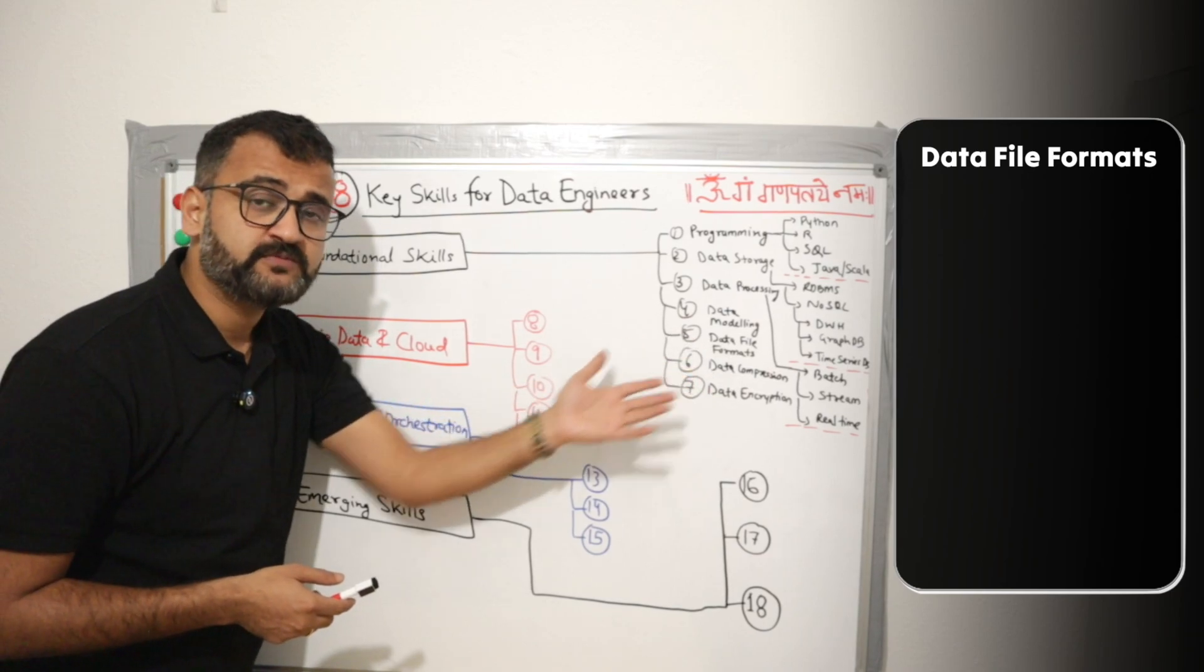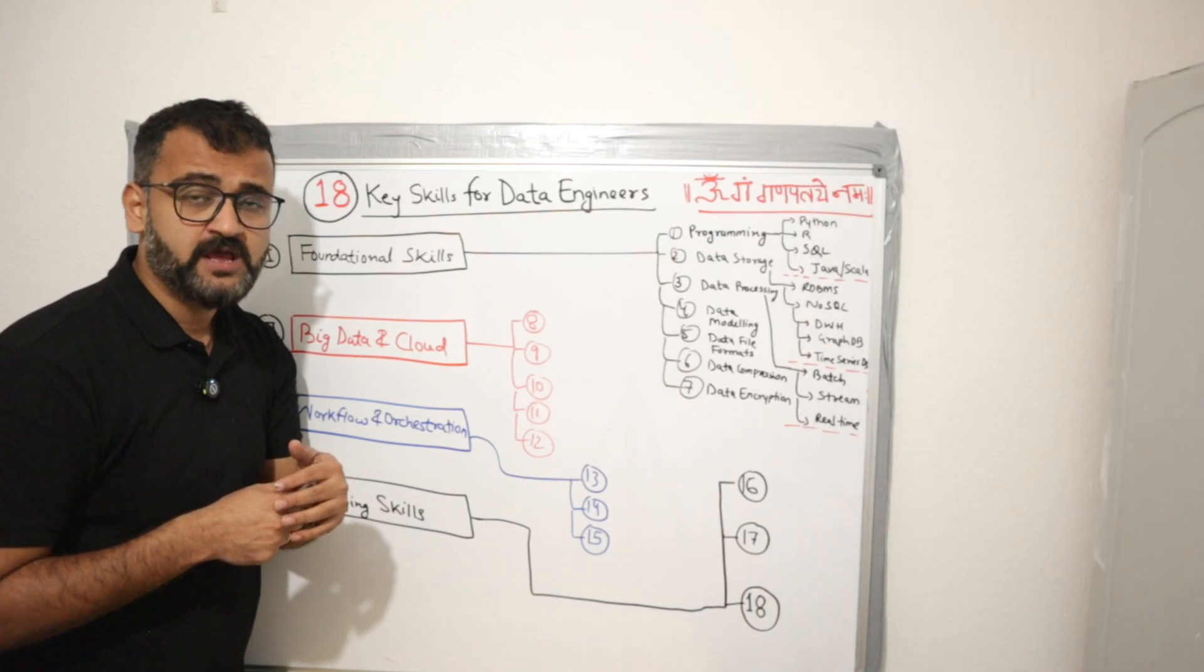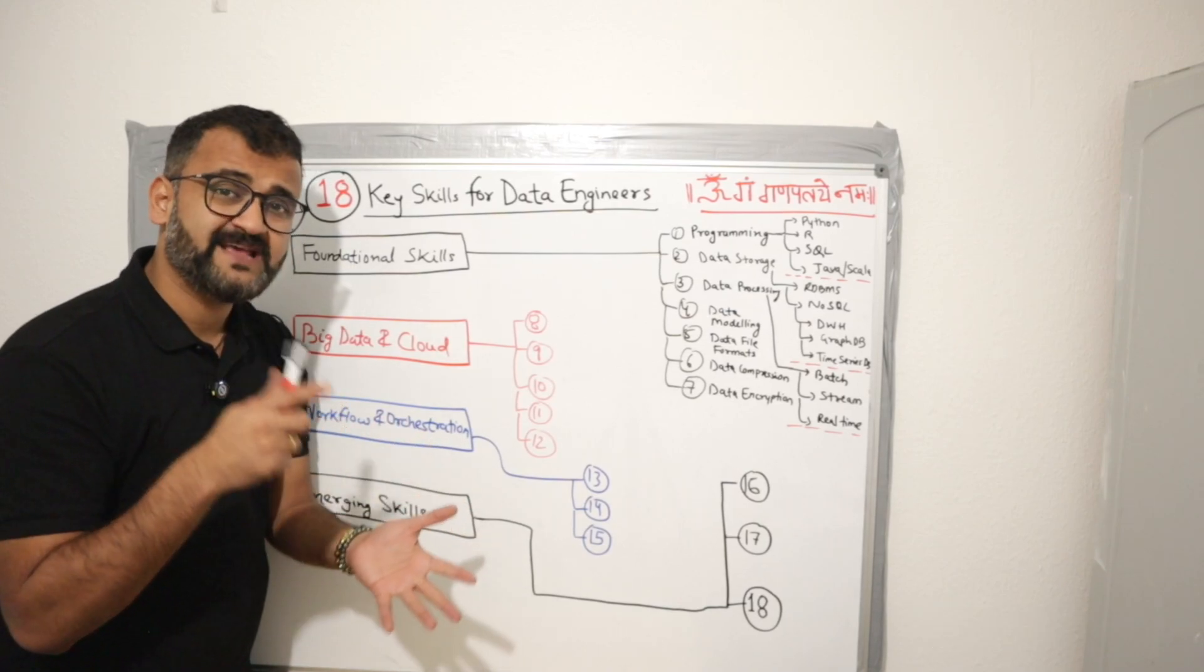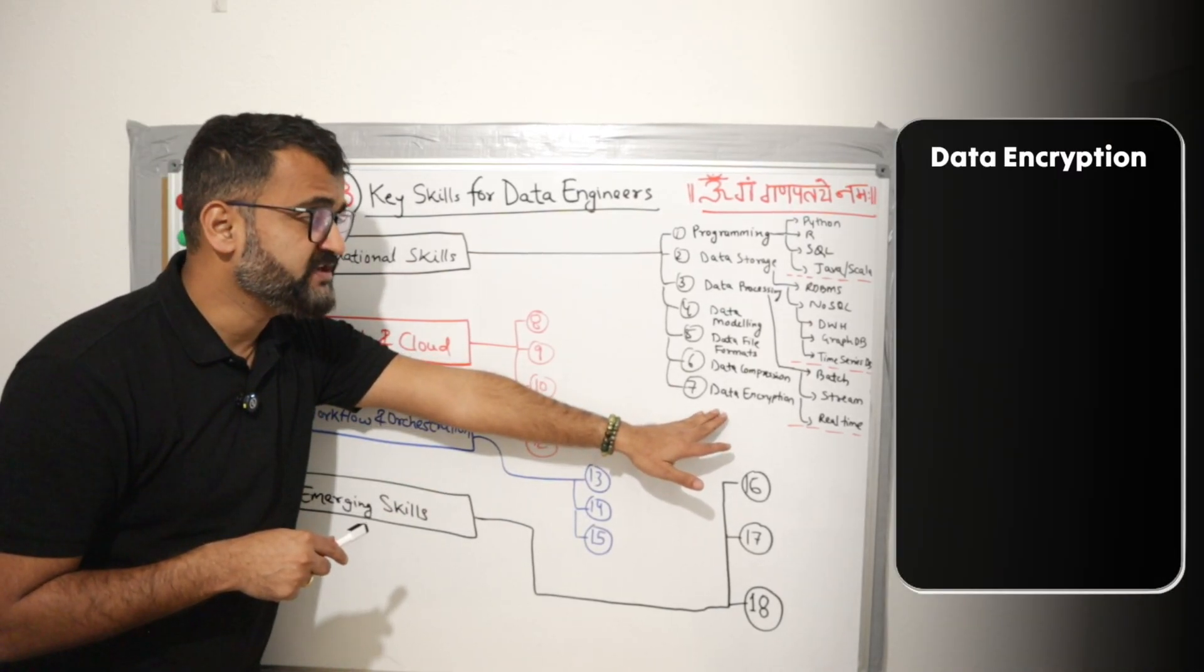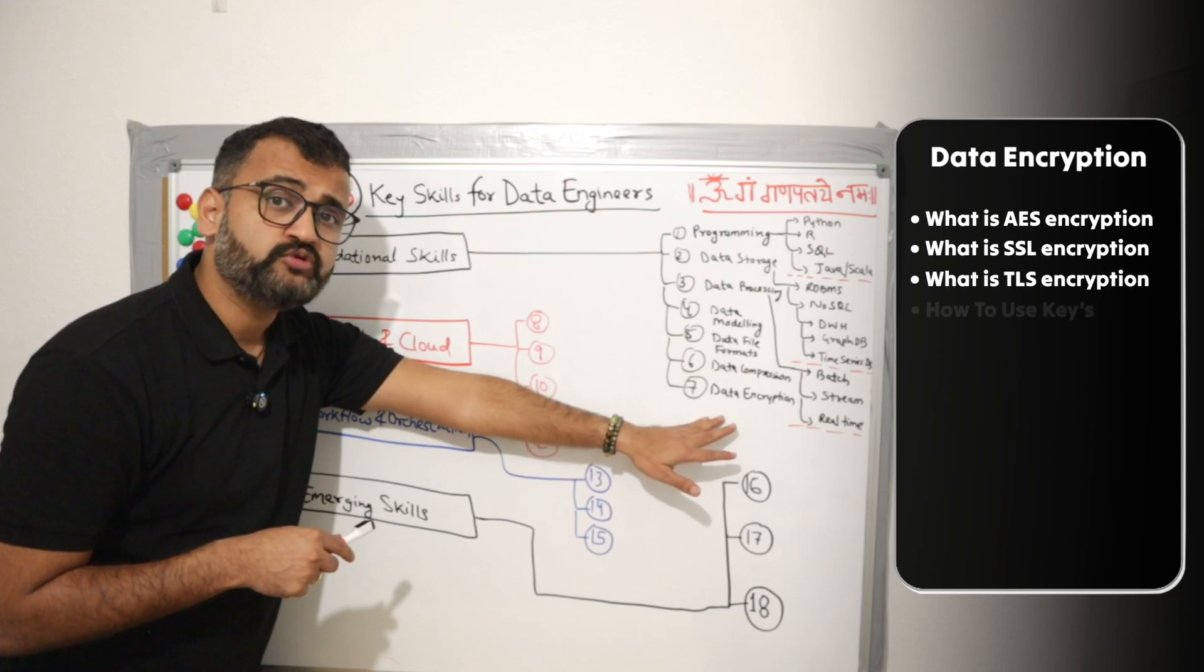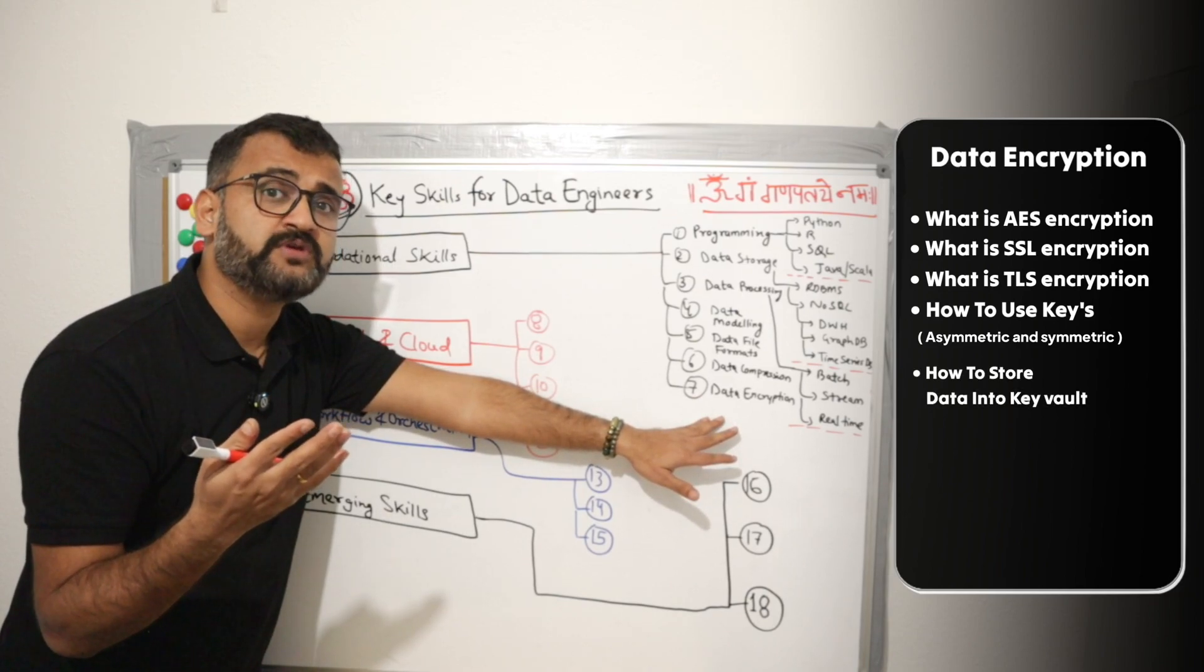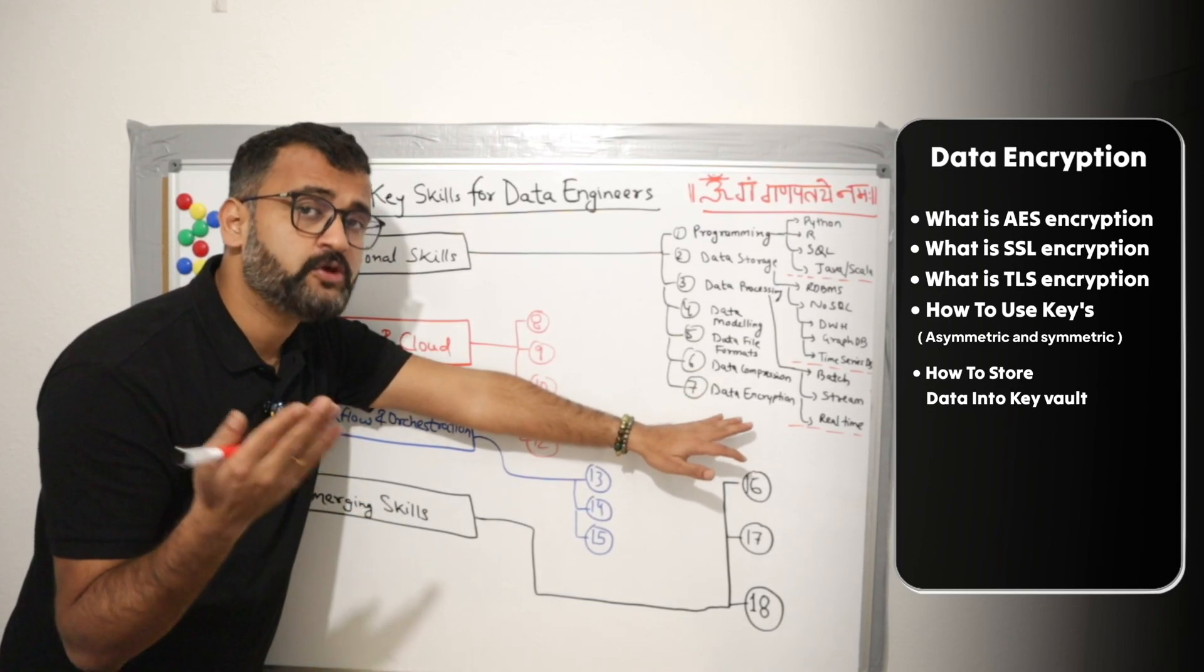There are different file formats with which you store data: Avro, JSON, Parquet, ORC. All these are different formats with which you store data. Coming to data compression, you need to know certain algorithms which are used for compressing the size of data, for example, GZIP and Snappy. And then finally, for security purposes, you need to know data encryption. What is AES encryption, SSL, TLS encryption? You need to know how to use keys, symmetric, asymmetric keys for encrypting or decrypting the data, and then how you can store data into key vaults. All those kinds of concepts. Not too detailed, but you need to know how you will secure the data.